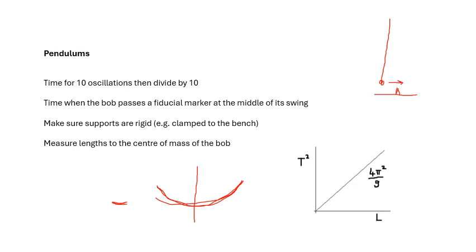If you're getting the value for little g, then from T equals 2π root L over g, square both sides. Plot T squared against L. The gradient is 4π squared over g.